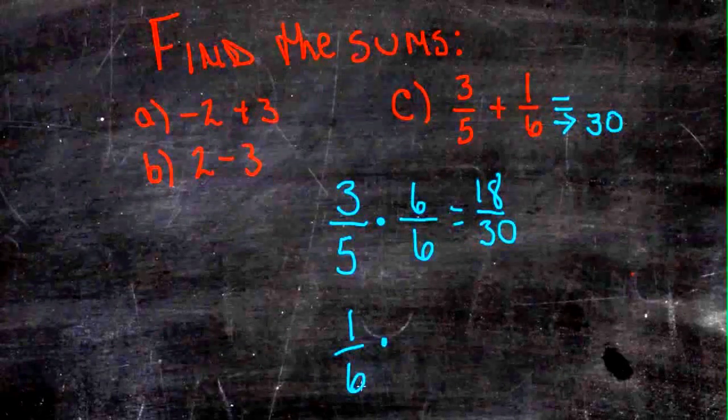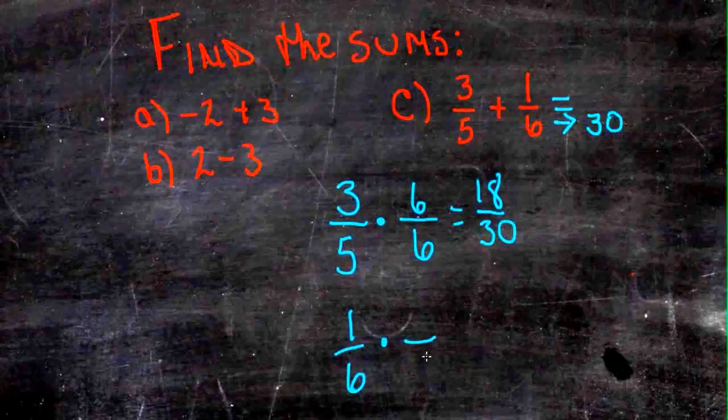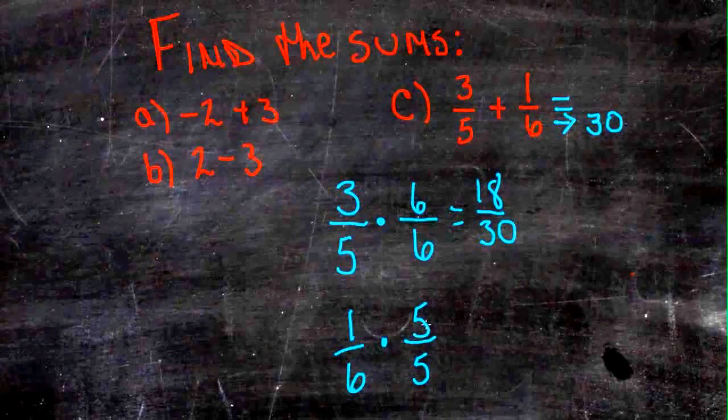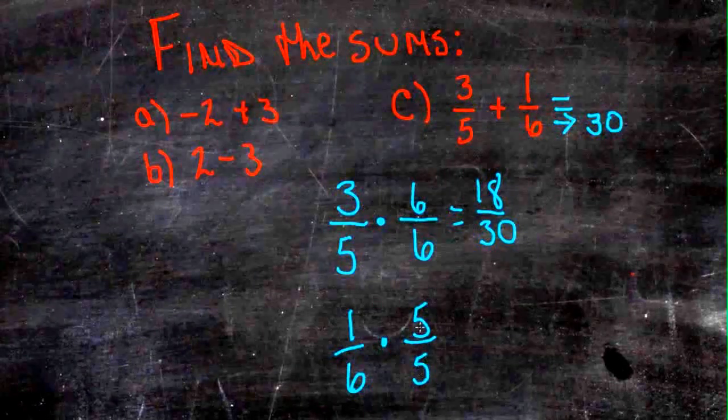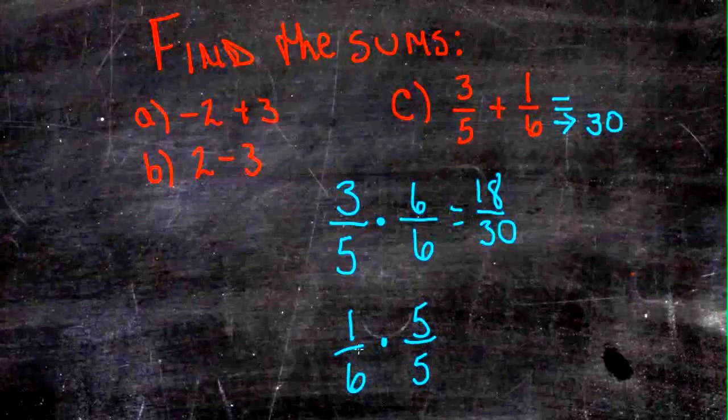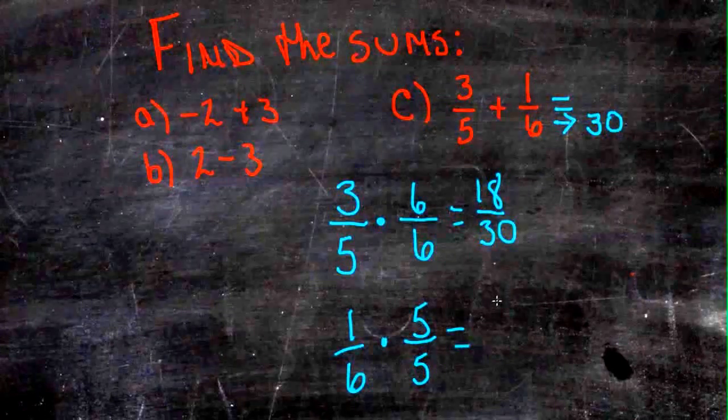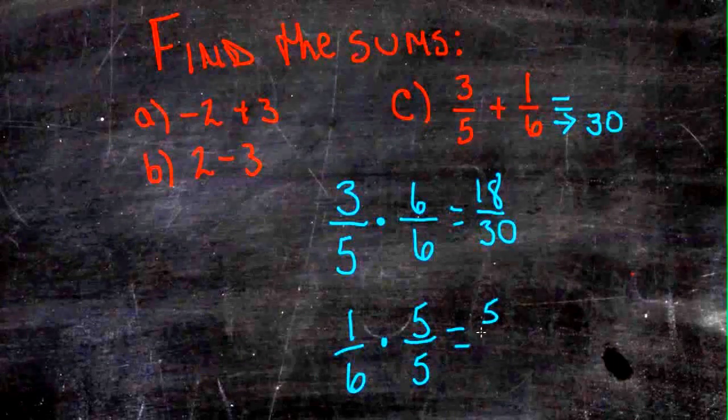1 sixth, to get 6 to be 30, we have to multiply it by 5, so we multiply 1 by 5 also. You'll see that really all we're doing is multiplying by 1, since 5 divided by 5 is 1. That means we aren't changing the value of this fraction at all. 1 times 5 is 5, 6 times 5 is 30.